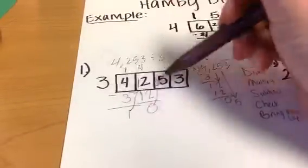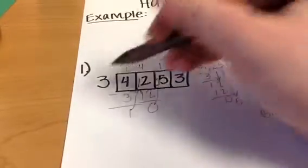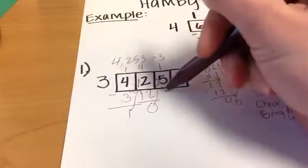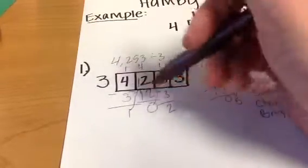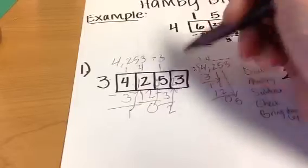So now we do it again. 3 goes into 5 how many times? Once. 3 times 1, the multiply step, is 3. Subtract. We have 2. Is 2 less than the divisor? Yes. So we bring it up in front of the 3. So it becomes 23.